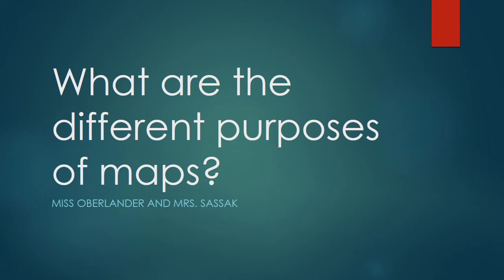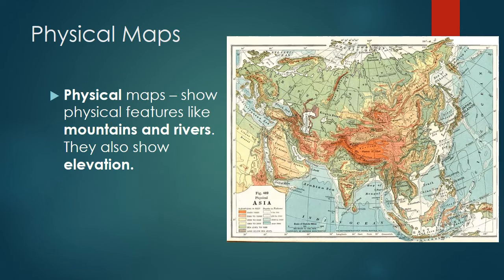Hi, welcome back. We're going to learn today what the different purposes of maps are. Our first map is called a physical map. They show physical features like mountains and rivers, and they also show elevation.